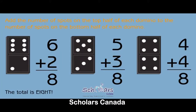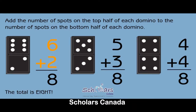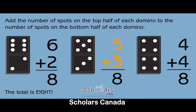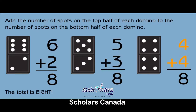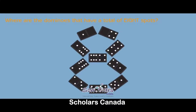Add the number of spots on the top half of each domino to the number of spots on the bottom half. The total is eight. Six plus two equals eight. Five plus three equals eight. Four plus four equals eight. Where are the dominoes that have a total of eight spots?